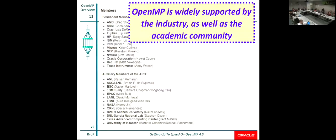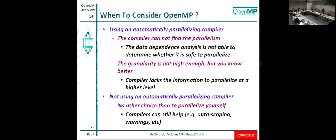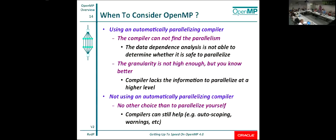So when does OpenMP come into the picture? If you're using an automatically parallelizing compiler, it's always worth a try. Depending on your language, your algorithm, and the way you write it, a compiler can either do magic or not find much. Fortran, especially the older style, is easier for a compiler to analyze than C or C++. The higher the level of abstraction, the harder it is for a compiler to find parallelism. But if the compiler doesn't find the parallelism or it finds parallelism at a level that's just not good enough, that's a reason to consider OpenMP. If you're not using any automatically parallelizing compiler at all, then OpenMP is the natural choice.